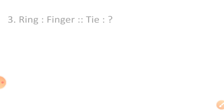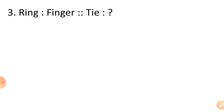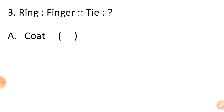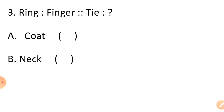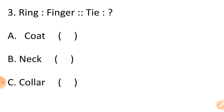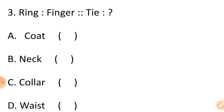Question 3: ring is related to finger. To which option is tie related? Option A coat, option B neck, option C collar, and option D waist.